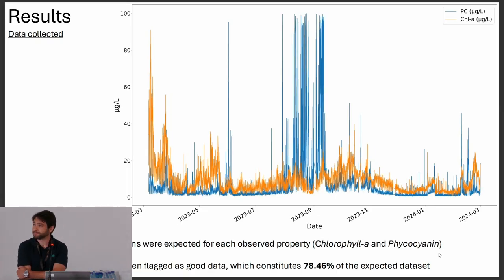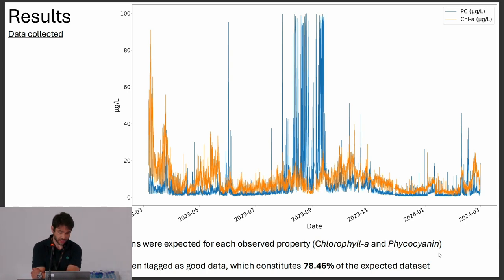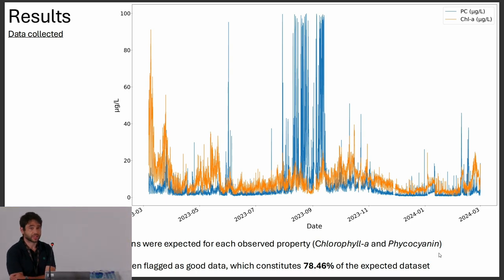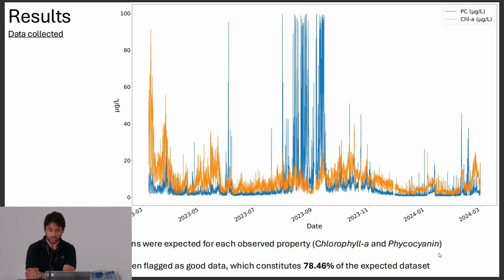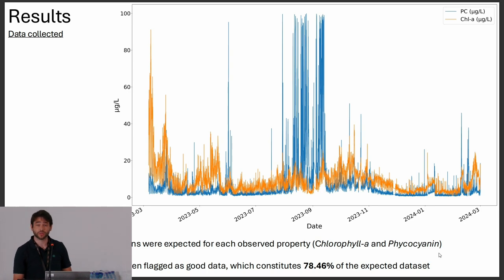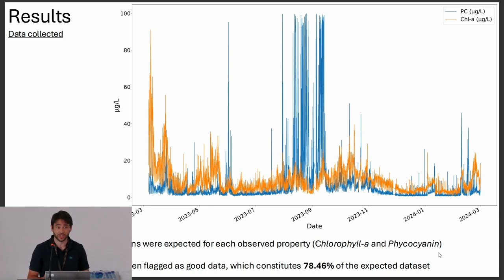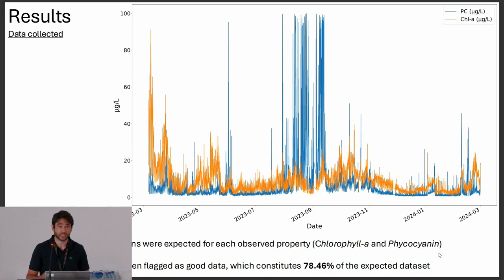Now some results. We collected data for more than one year; in this presentation I focused on just one year, from March 2023 to March 2024. We expected to collect 52,000 observations, but just 41,000 have been flagged as good data, constituting 78% of the expected dataset. This percentage could seem quite low, but for us it is a quite interesting result, because we are not measuring air temperature — which is easy to measure — but we are measuring algal pigment concentration with a fluorimeter. There are many biases that can happen, for example a fish swimming near the sensor, or solar reflection entering the fluorimeter and creating other biases.